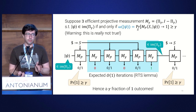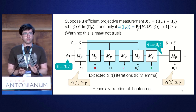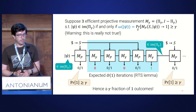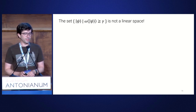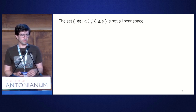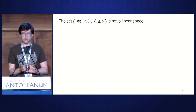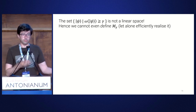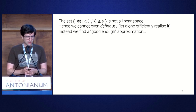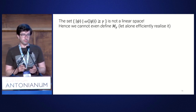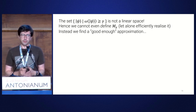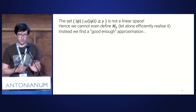One reason this M_gamma doesn't literally exist is that the set it projects onto is not a linear space — it's defined by a quadratic form. So we can't define M_gamma as a projector, and we certainly can't efficiently realize it. Instead, we find a good enough approximation. We analyze omega(psi) = the expected value of a Hermitian matrix H on psi, where H is a weighted sum over S of the Pi_P(S) operators.